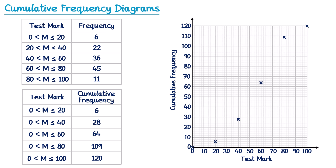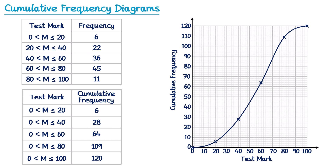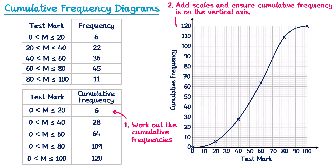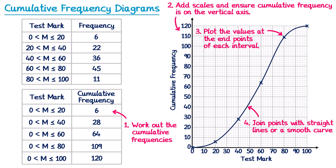We then join these crosses together. You have a choice: you could use straight lines connecting them from left to right, or alternatively use a smooth curve. Both methods will get you all of the marks in the exam — I'd personally recommend straight lines as I think it's easier. So to review: we worked out cumulative frequencies by adding on the previous frequency each time, scaled the axes with cumulative frequency on the vertical axis, plotted each cumulative frequency at the end of each interval, and finally connected them with a straight line or smooth curve.